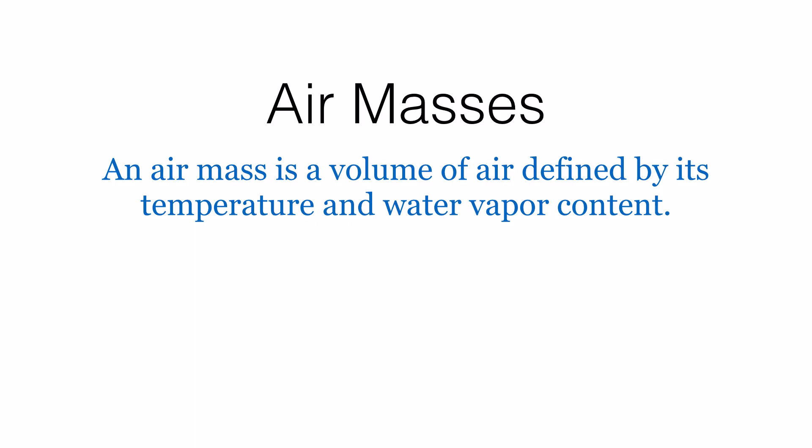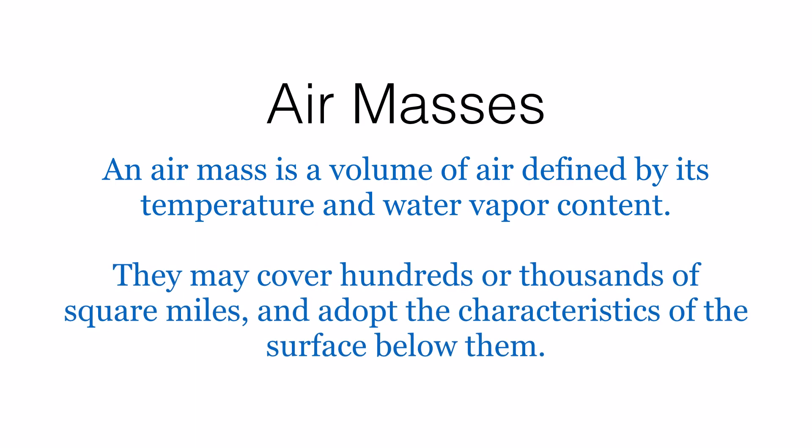Air masses can be huge. They may cover hundreds or even thousands of square miles, and they're going to take on the characteristics of the land or ocean beneath them. An air mass that sits over the ocean will tend to be humid, while one forming over land will be more dry.